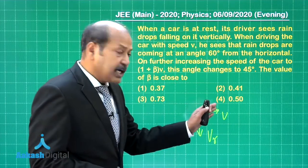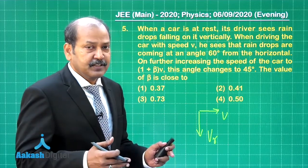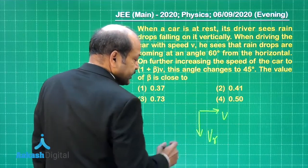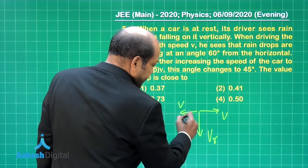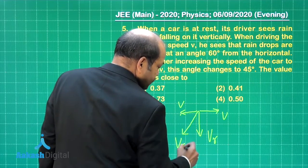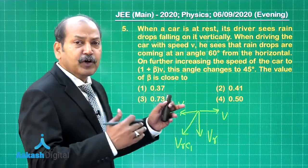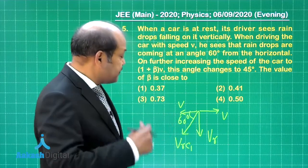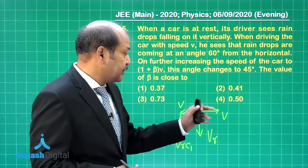Then with respect to the car, the rain appears to come at an angle of 60 degrees with the horizontal. So that means we subtract from this vector, this velocity vector. So we add negative of that, magnitude of course will be v. And if we do the addition, this is the velocity of the rain with respect to car in the first case. So let us call it vrc1. And according to the question, this angle is 60 degrees.